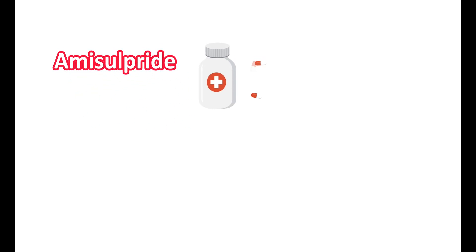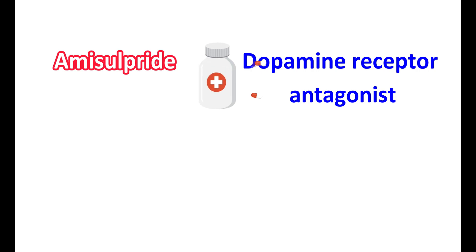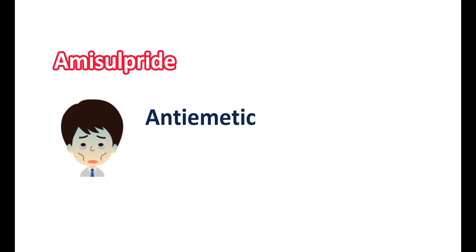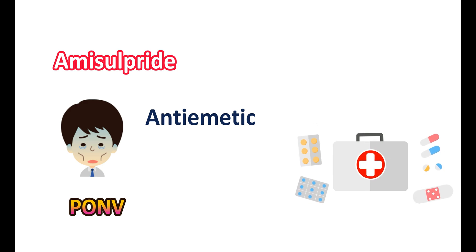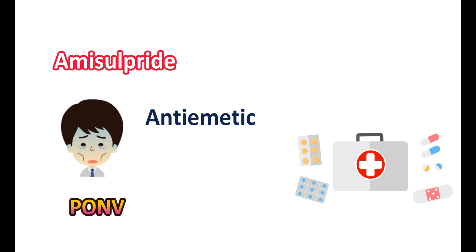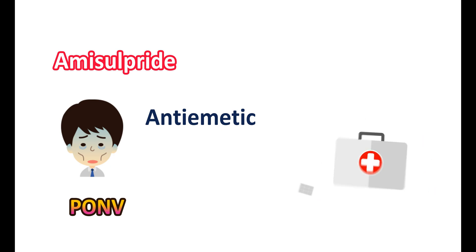Amisulpride is a medication classified as a dopamine receptor antagonist, available as a solution for injection. It is particularly used to treat post-operative nausea and vomiting, and can be used either alone or combined with other medications. In this video, we will discuss how amisulpride works, along with its important precautions, side effects, and doses.